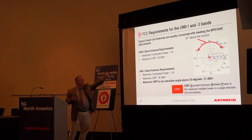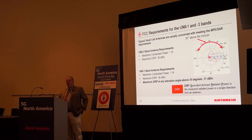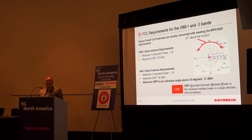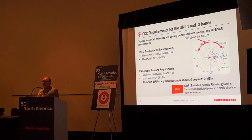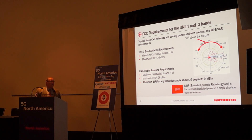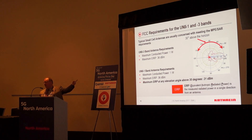For Uni-3 you can see the maximum conducted power, the input, is on the order of one watt. So that's the max power that the radio can put into the antenna. The maximum EIRP is 36 dBm. Equivalent isotropic radiated power is just the sum of the gain and the power in from the radio. So if you have one watt in, that's 30 dBm, the gain of the antenna is only going to be 6 dBi.